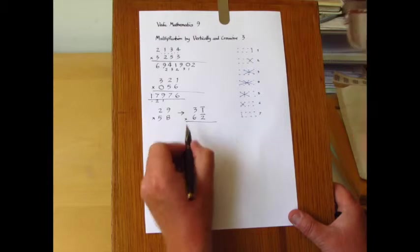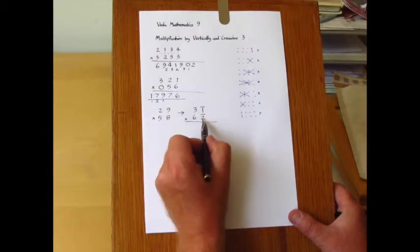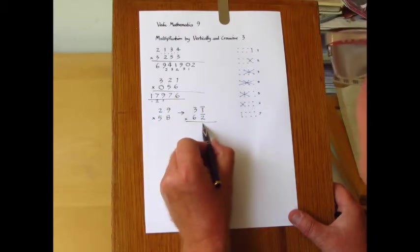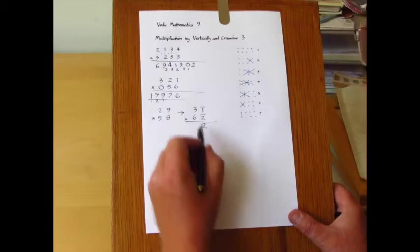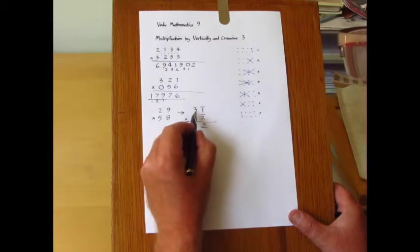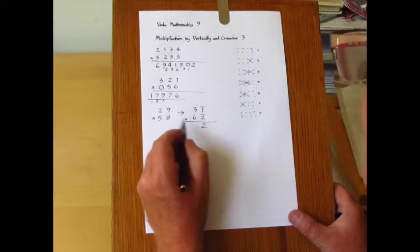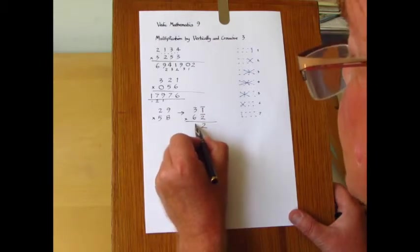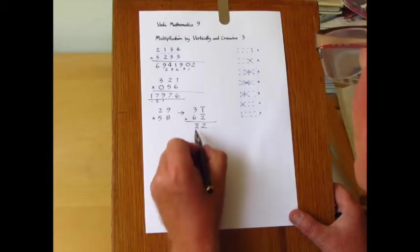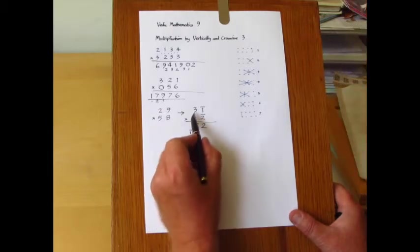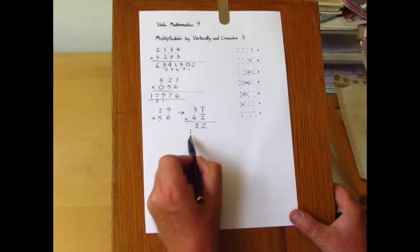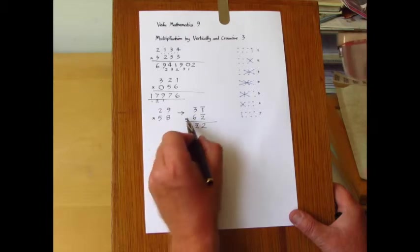It does require of course more than one line of working. So we've got minus one times minus two is plus two. And then we have minus six. Add minus six makes minus twelve. So we can write that as minus two with minus one to carry. And three times six is eighteen. Add minus one makes seventeen.